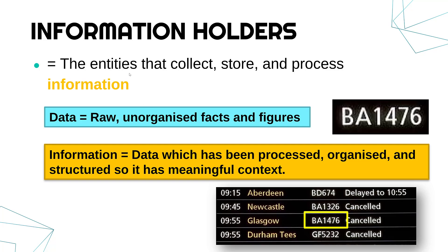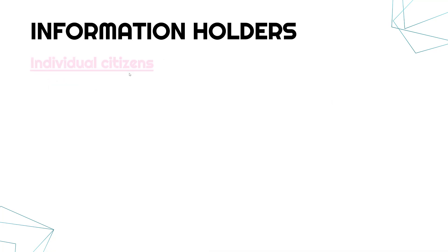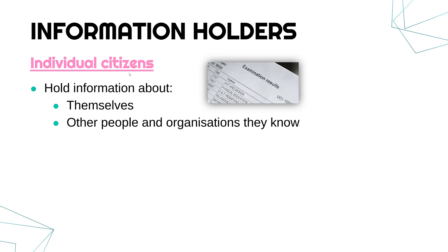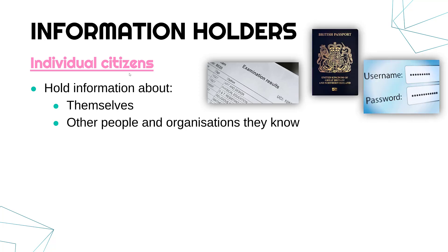Let's look at some of these entities that collect and hold information, starting with individual citizens — so all of us. We have information about things related to us, and also about other people and organisations we are aware of. About ourselves, we've got things like exam results, our passport, and our usernames and passwords. But equally, we know contact details of our friends and businesses, and facts about people around us — all of that is information.